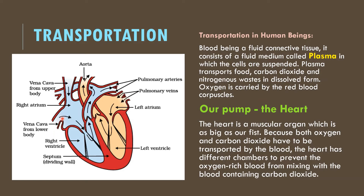The deoxygenated blood enters through the superior vena cava and the inferior vena cava, which carry blood from all parts of the body to the heart. The superior vena cava handles the upper part of the body and the inferior vena cava the lower part. They bring deoxygenated blood to the right atrium, at which point the valves dividing the atrium and ventricles are closed, and the atrium expands to collect the blood.